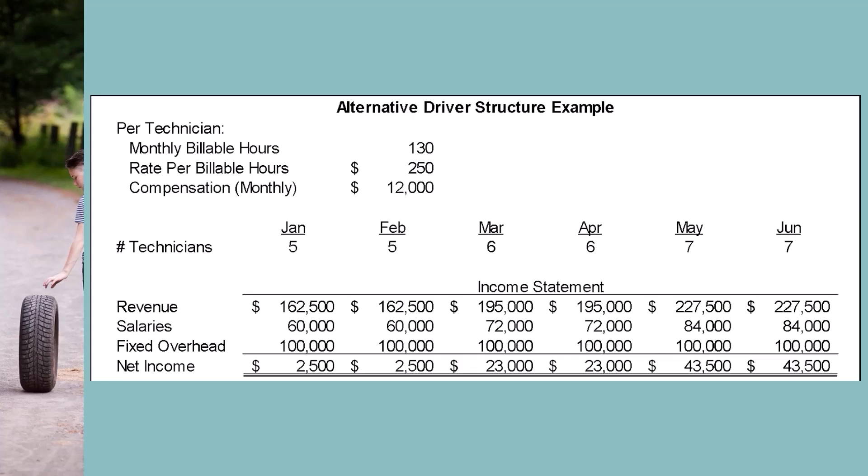Another example of this logic is in CPA firms. Partners at CPA firms bring in new business, and every partner is expected to bill out certain hours each month. Thus, each new partner — in place of the number of technicians — drives a salary expense and billable hours. I created two examples of driver logic to show that it's very important to understand a company's business model when setting up how the drivers flow to the income statement. The income statement looks exactly the same in both examples, but the driver logic is very different.